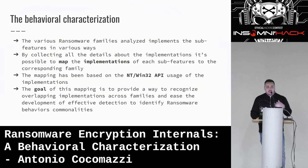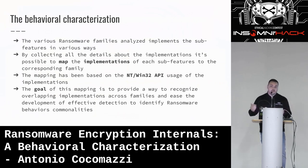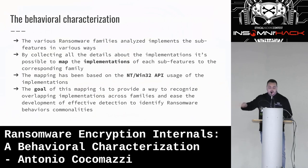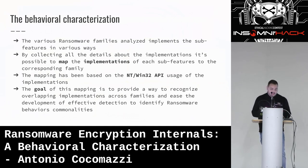The main goal was not just providing knowledge to malware analysts — most of them already know these operations. The main reason was to have a threat model that, by mapping implementations, could spot commonalities across implementations. The mapping was based on Win32 API usage because with Win32 API usage we can understand the side effects and telemetry left on the system, which can represent behavioral detection opportunities for defenders. The goal of this mapping is to recognize overlapping implementations across families and develop effective detection to identify ransomware behavioral commonalities.